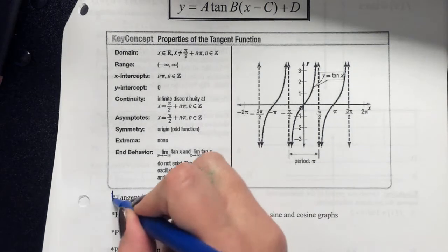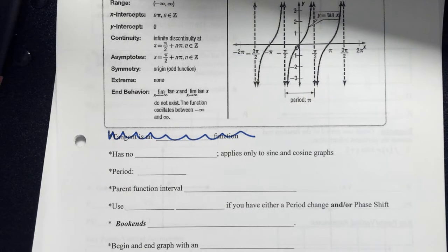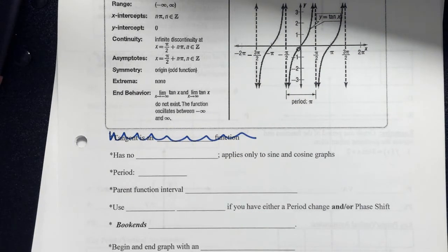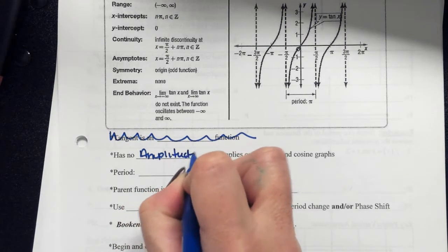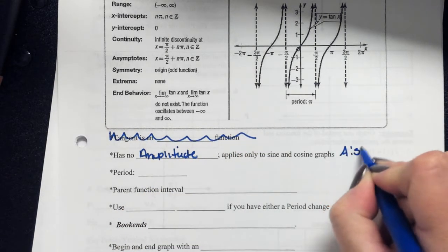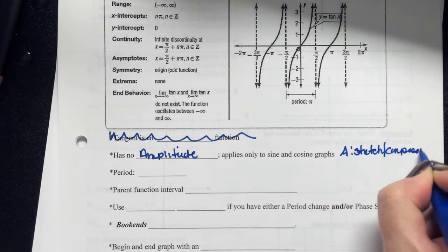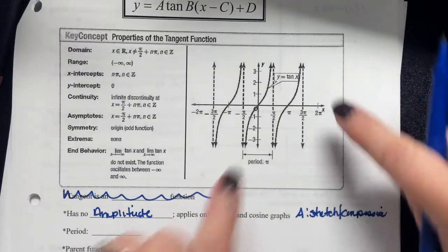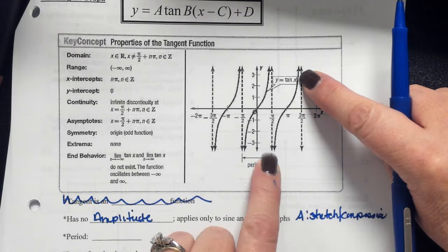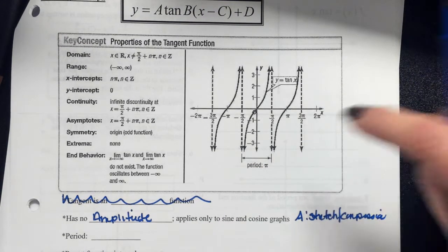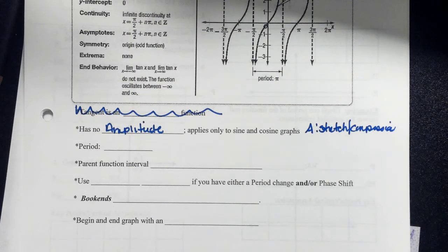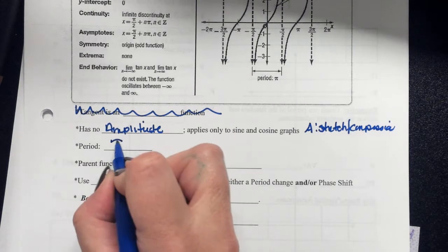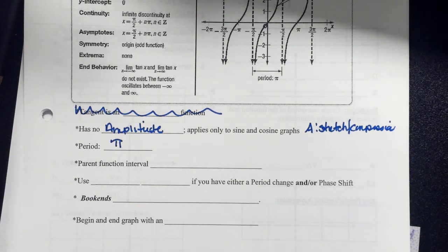We'll discuss tangent. Just like secant and cosecant, it has no amplitude. The A value is going to be a stretch or compression. So just like secant and cosecant does not have an amplitude, tangent does not either. If you take a look at the parent function, you can see how the behavior of tangent goes to positive infinity or negative infinity, so there is no maximum. What makes tangent more different than sine and cosine is the period is shorter — it's pi. So tangent has a period of pi versus the other four having a period of 2pi for the parent function.